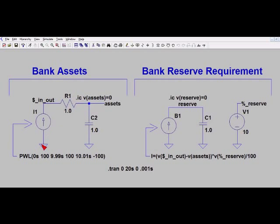So initially I've set up a very simple model where this current source sends in a hundred thousand dollars a month in deposits for 10 months, and then what it does is it reverses and it withdraws funds at a hundred thousand dollars a month for 10 more months.